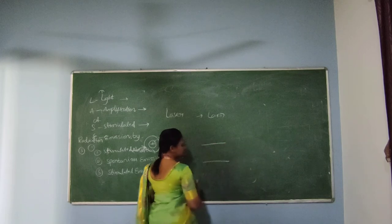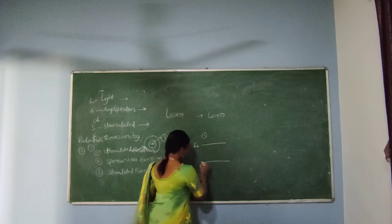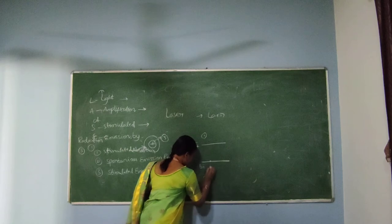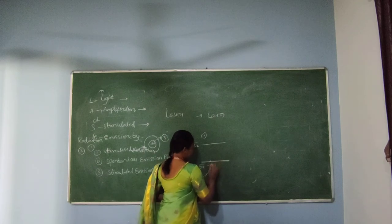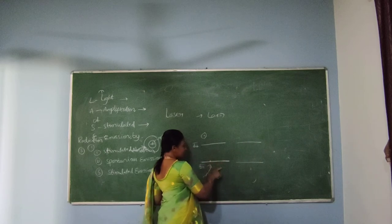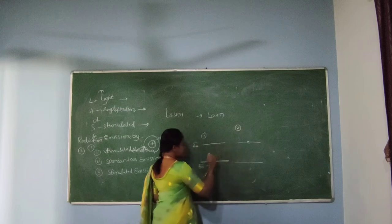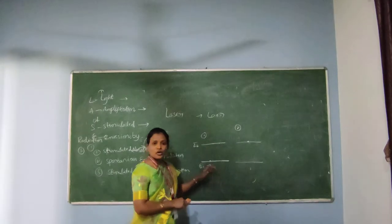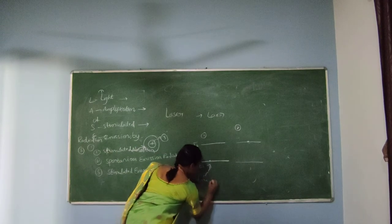Taking two energy levels — E1 and E2. The atom is at E1 state, which is the ground state. Supplying one photon means external photon. This photon is absorbed by the atoms; it will transition from ground state to excited state. This is absorption only. The external energy absorbed by the atom — that state is known as Stimulated Absorption.